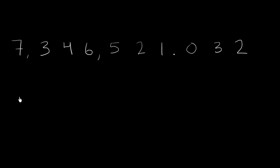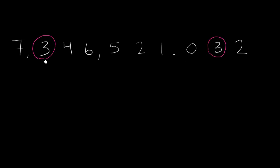We have the number 7,346,521 and 32 thousandths. What I want to think about is, if I look at the same digit in two different places — in particular, I'm going to look at the digit 3 here and the digit 3 here — how much more value does this left 3 represent than this right 3? In order to think about that, we have to think about place value.